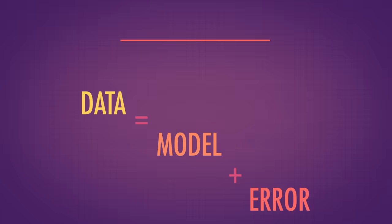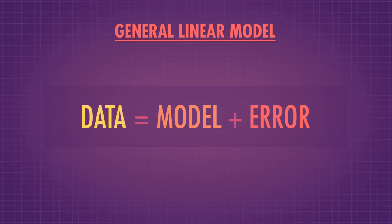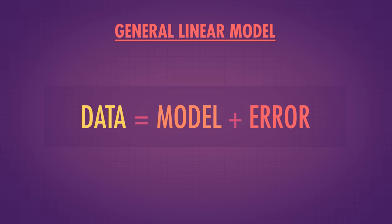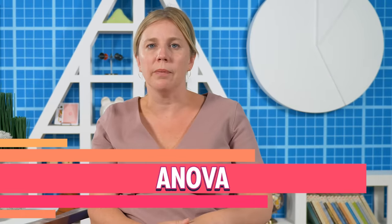The GLM framework takes all the information that our data contain and partitions it into two piles: information that can be explained by a model that represents the way we think things work, and error, which is the amount of information that our model fails to explain. So let's apply that to a new model, the ANOVA.